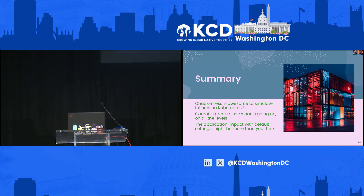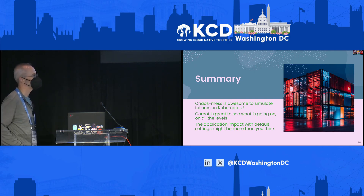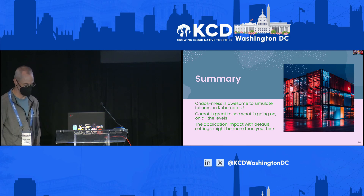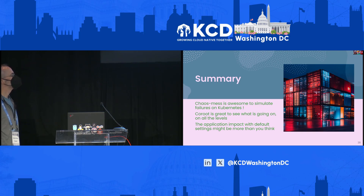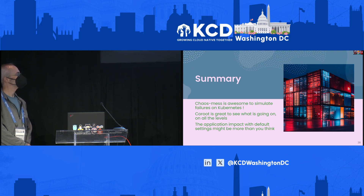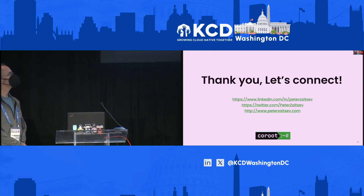As a summary: Chaos Mesh is awesome for simulating failures on Kubernetes. This is a lightning talk so I could only show you a couple of them briefly, but you can of course test much more things — I'd suggest you do that before you run into problems in production. Karoot is an open-source observability tool that lets you see what is going on at different levels — Kubernetes level, application level, and so on. The most important takeaway is that default configuration may actually have much more downtime in case of failure than you anticipated — 60 seconds or three minutes may be more than you want. So configure your operators and Kubernetes wisely. Thank you.